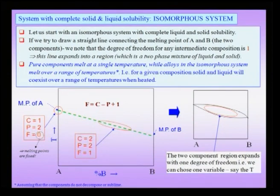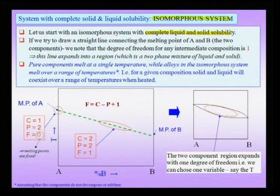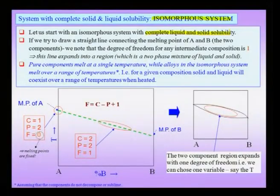An isomorphous system is one wherein there is complete liquid and complete solid solubility. This is possible only when Hume-Rothery's rules are satisfied — meaning the A and B components have the same crystal structure, similar electronegativity (so no tendency to form a compound), and very similar atomic sizes with a radius difference not more than about 12 percent. The similar crystal structure, similar electronegativity, and similar size together imply that you could have an isomorphous phase diagram with complete solid solubility.